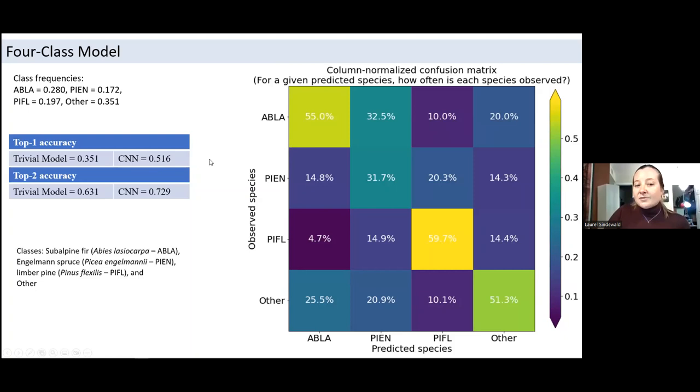So because the six-class model had such low accuracy, we decided to pool the classes with less data to see if that could improve model performance. We're most interested in separating the conifers, and especially limber pine, so we collapsed the data into four classes: subalpine fir, Engelmann spruce, limber pine, and other. The accuracy does improve with a top one or global accuracy of 51.6% as compared to a trivial model accuracy of 35.1%, and a top two accuracy of 72.9 versus 63.1% for the trivial model. Limber pine emerges as the class with the highest accuracy, followed by subalpine fir and other, both of which have greater frequencies than limber pine. Engelmann spruce is getting confused with subalpine fir, which makes sense given their similarity in morphology and often also color, but is generally getting confused with everything else. The model is not a reliable predictor of Engelmann spruce.